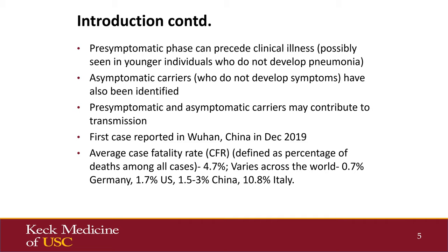With this disease, we are learning there are asymptomatic carriers, and there is also a pre-symptomatic phase. The pre-symptomatic phase simply precedes clinical illness and has been commonly identified in younger children who don't get severe disease. Asymptomatic carriers are people who never develop disease. In epidemiology, asymptomatic carriers are typically responsible for less than 5% of transmission, but we do not know if that's the case with SARS-CoV-2. There have been cases associated with asymptomatic carriers in Singapore and South Korea.